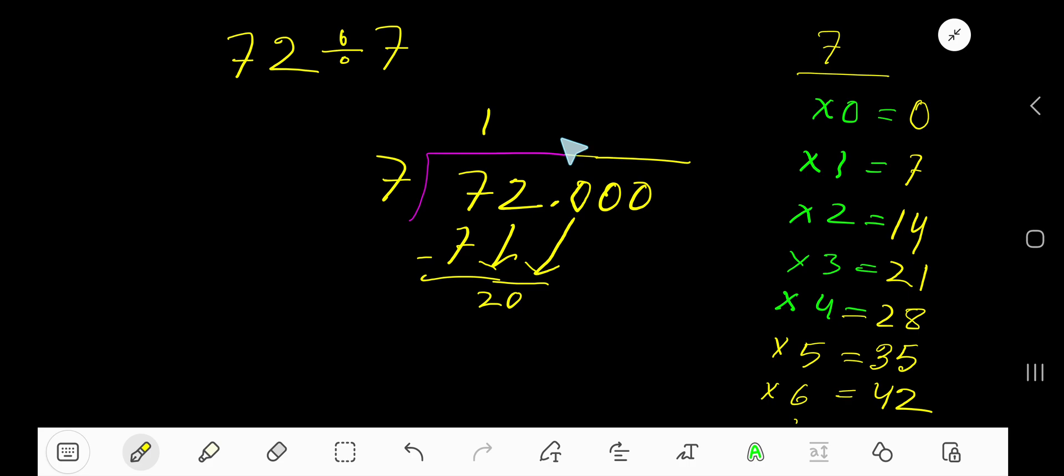7 goes into 20 how many times? 3 times 7 is 21, which is too much. So 2 times. 2 times 7 is 14. Subtract to get 6.